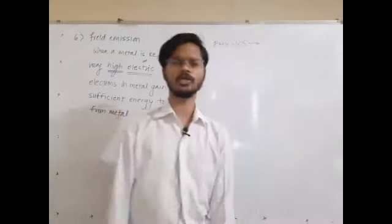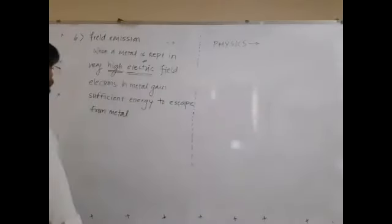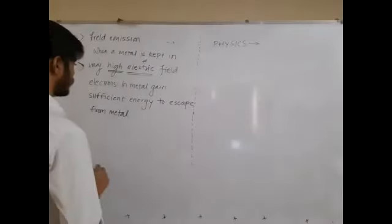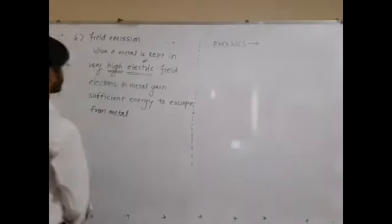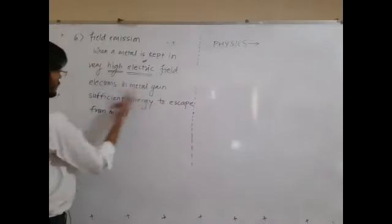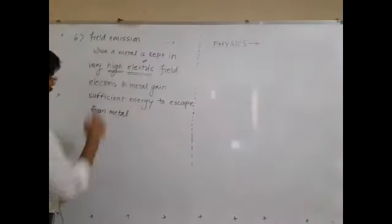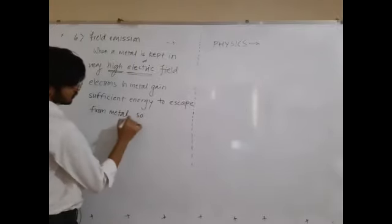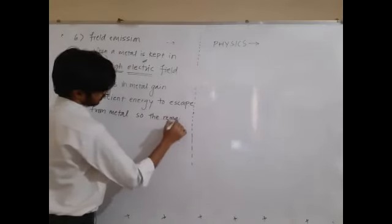We will define electric field, measure it, and write the formula. The chapter name is electric charges and fields. When a metal is kept in a very high electric field, electrons in the metal gain sufficient energy to escape from the metal.